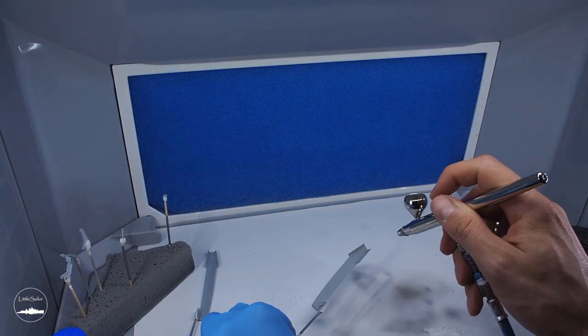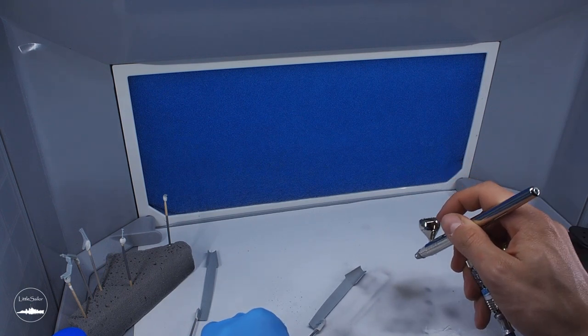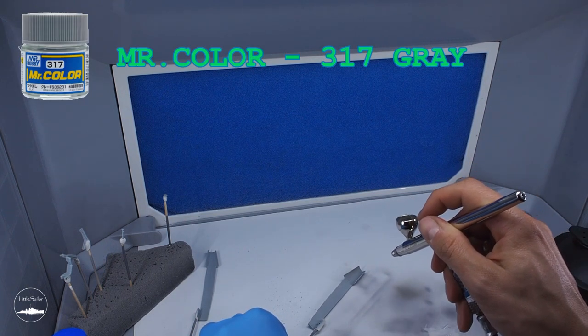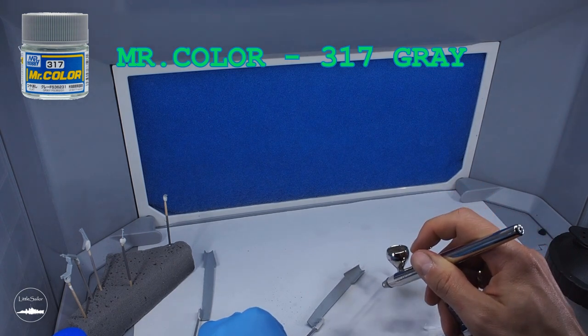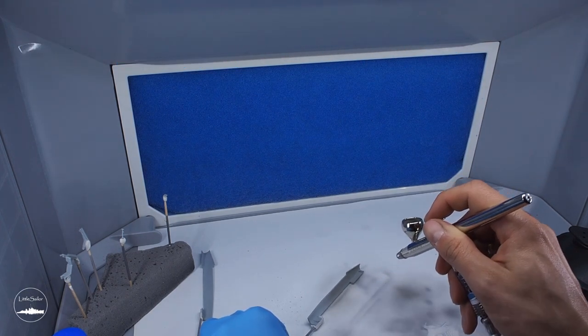After about 20 minutes, the primer dried. I changed the paint to 317 gray and painted the inside of the hull and cockpit.